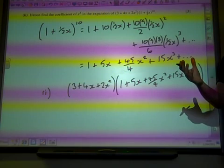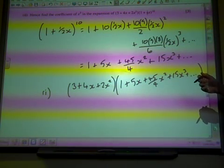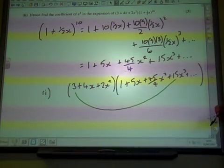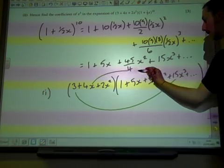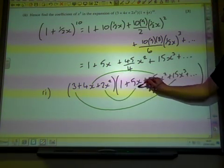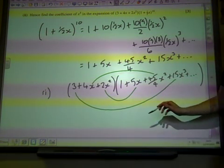Now we're not going to multiply everything out, because there aren't enough marks allocated for that. We're just going to work out, how would we get x cubed out of this? We'd do three times the x cubed term, we'd do four x times the x squared term, and we'd do two x squared times the five x term. And we work out what we get from this.